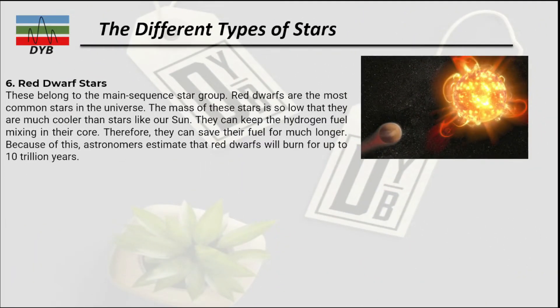The sixth type is the red dwarf star. Red dwarfs belong to the main sequence star group and are the most common stars in the universe. Their mass is so low that they are much cooler than stars like our Sun. They can keep hydrogen fuel mixing in their core and therefore save their fuel for much longer. Astronomers estimate that red dwarfs will burn for up to 10 trillion years.